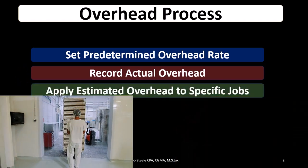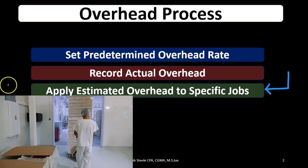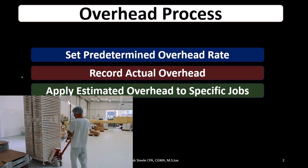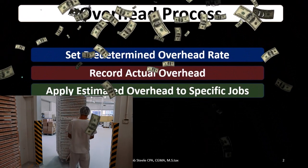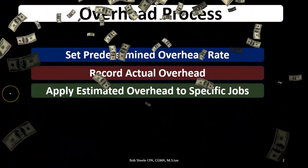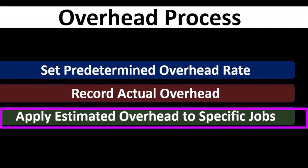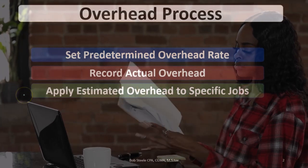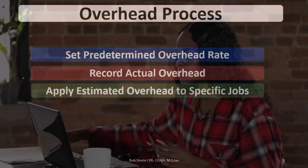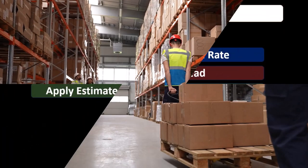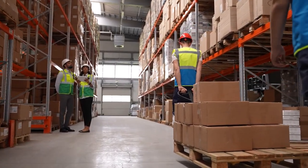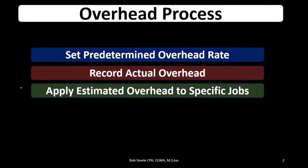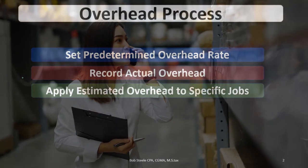Then we're going to apply estimated overhead to specific jobs. Note that these two steps may not go in order — as we go through a time period, we're going to be incurring overhead as we go, paying the utility bill in the factory, paying indirect employees. We're also going to be applying estimated overhead to jobs as we go. We may apply overhead to a job before we've recorded all the overhead for that period, because the month isn't over. The predetermined overhead rate lets us apply whenever we need to, independent of whether all actual overhead has been recorded.